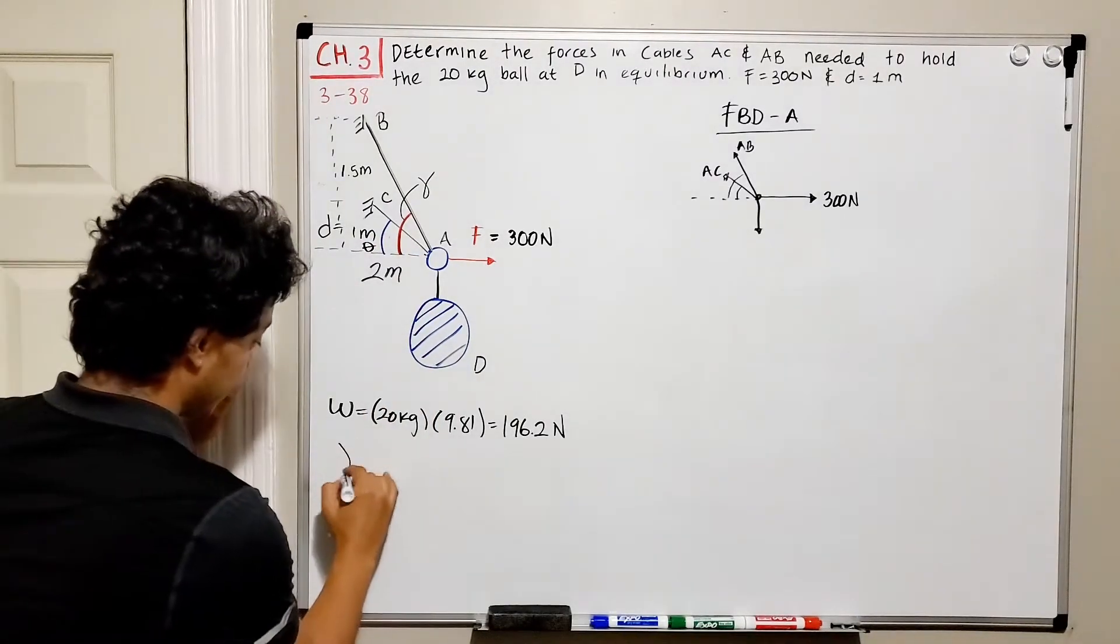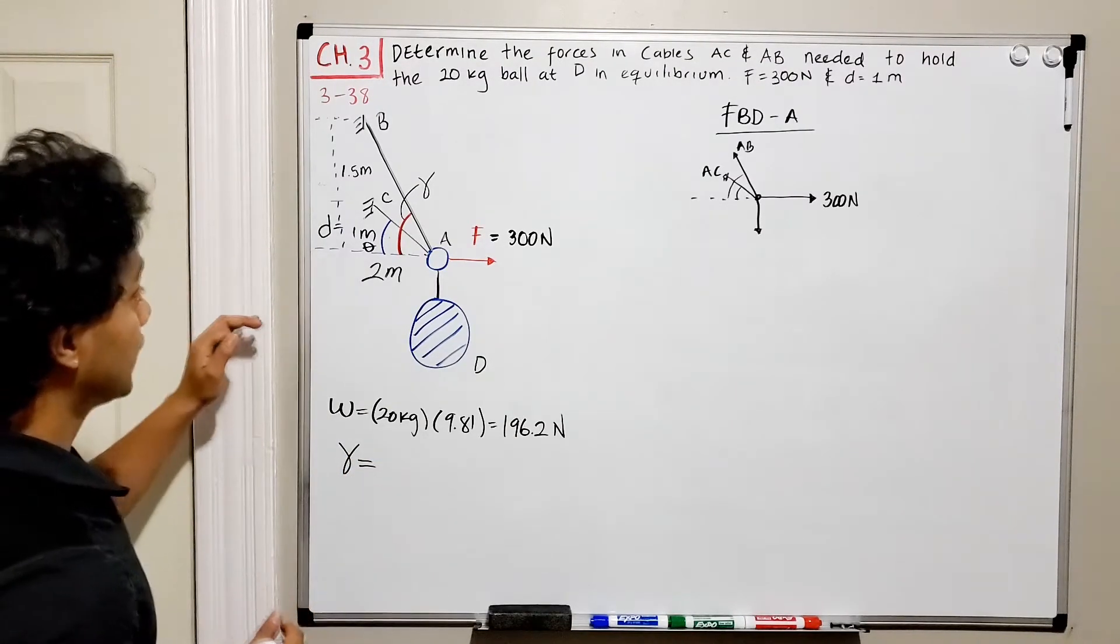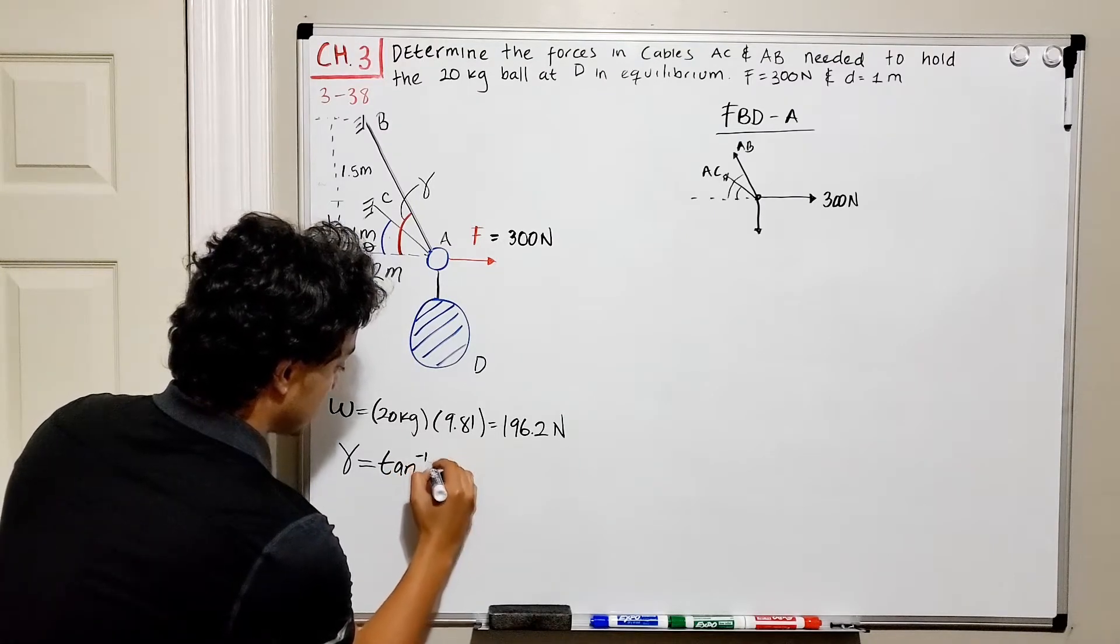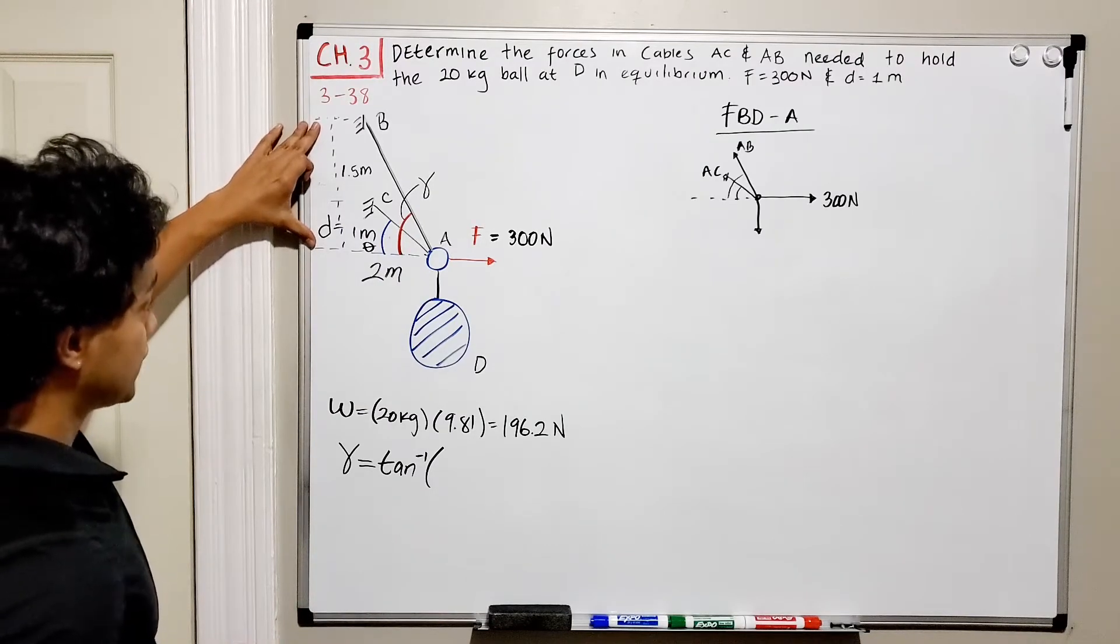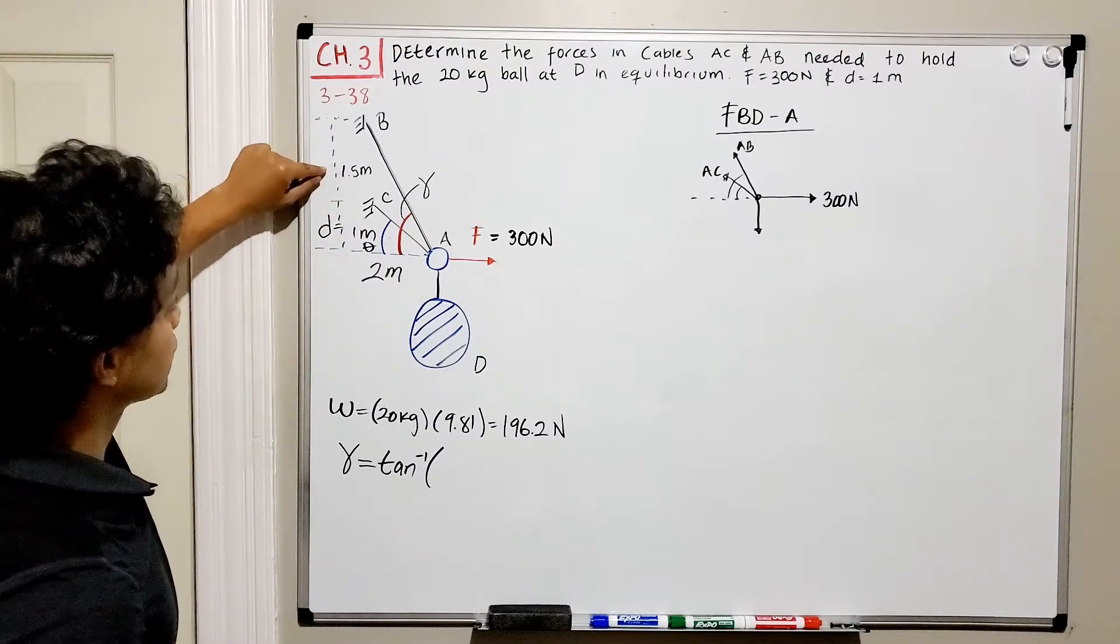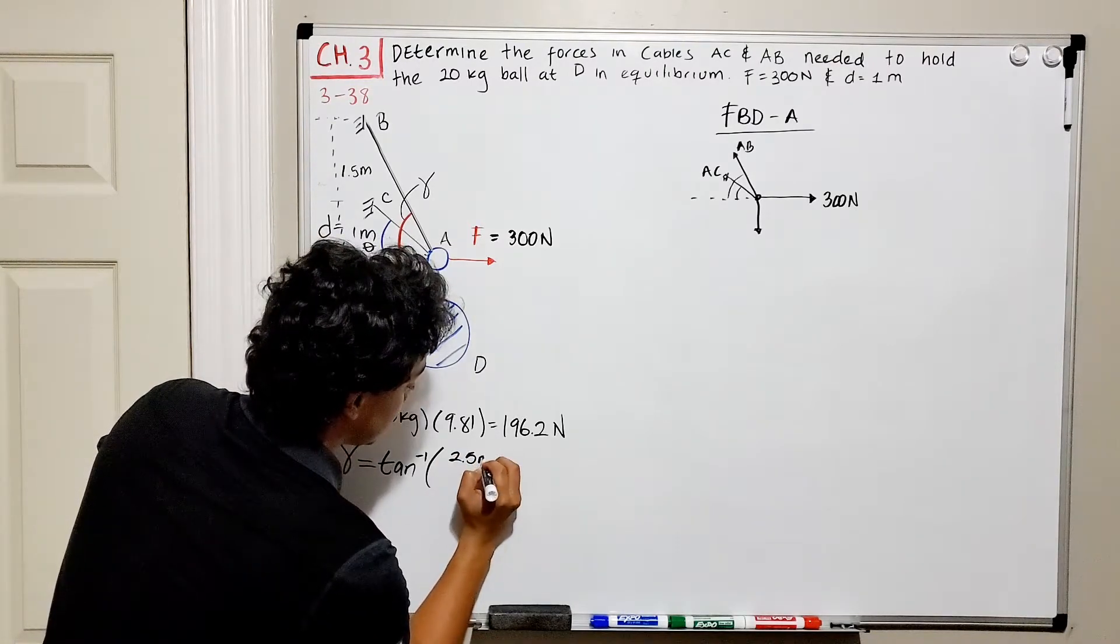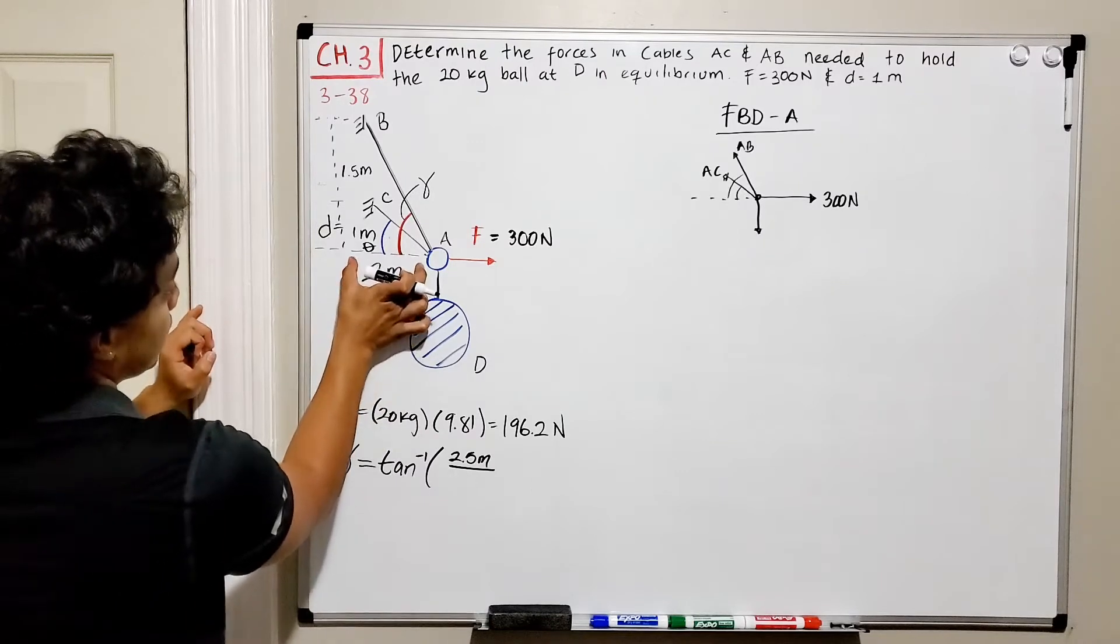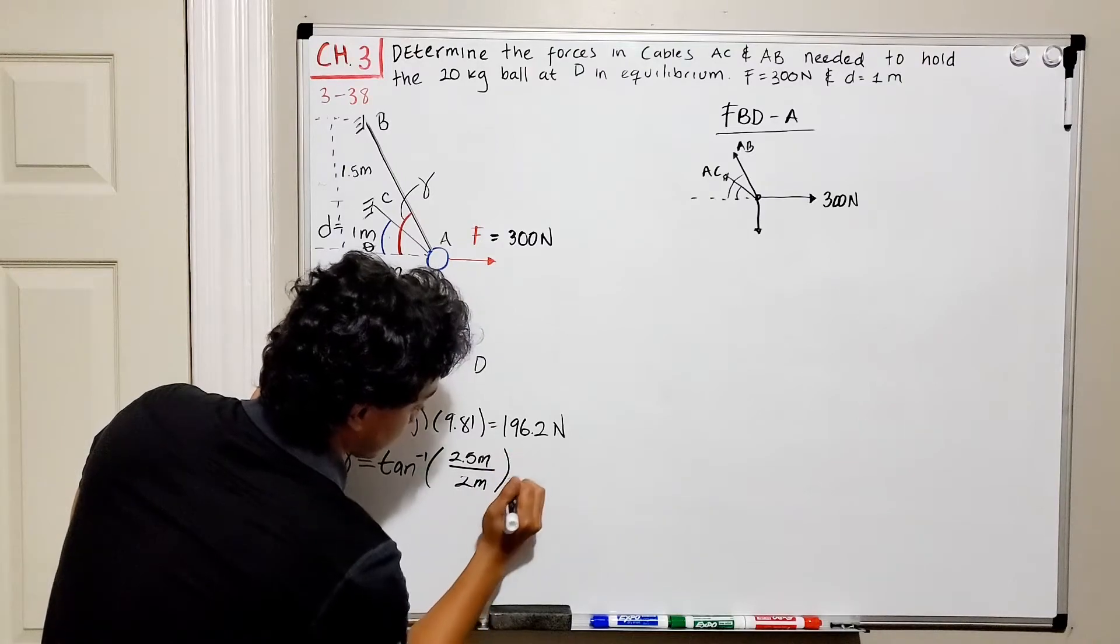So let's find gamma first. If we want to find gamma, we can do it by applying the inverse tangent. And since we know tangent is opposite over adjacent, the opposite is 1 meter plus 1.5 meter, so that gets me 2.5 meters, all divided by the adjacent, which is 2 meters.